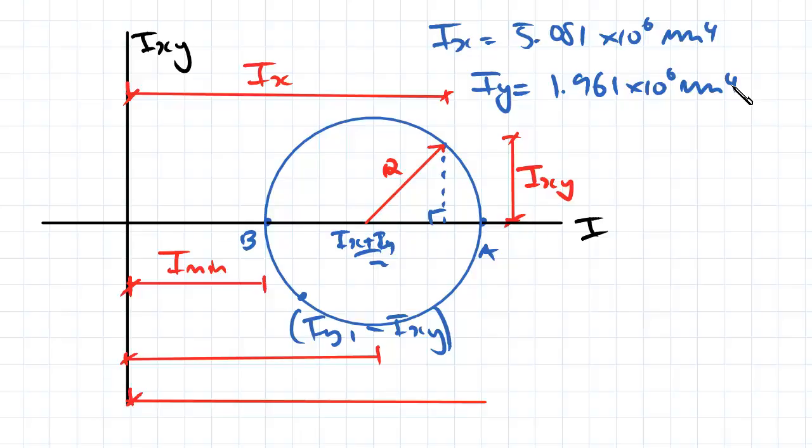And we'd also determined what Ixy was equal to and that was equal to minus 1.32 times 10 to the 6 millimeters to the power of 4. So with that we were going to use that to determine what this value here was, Imax.